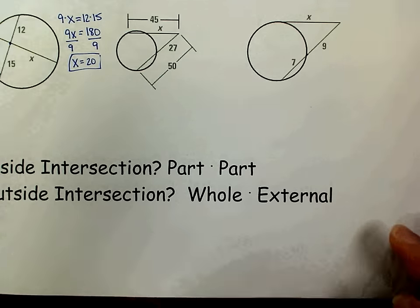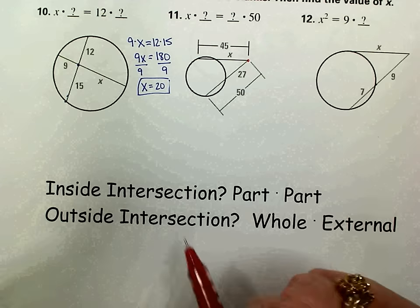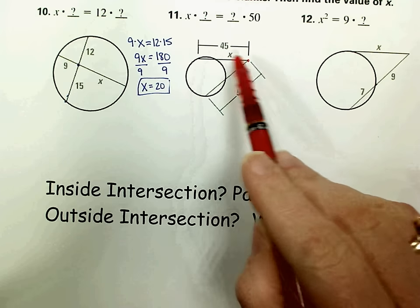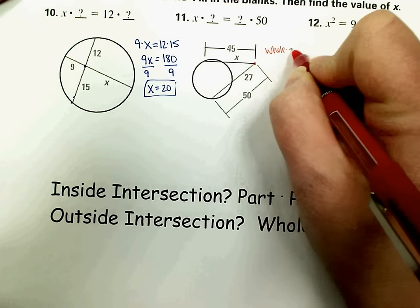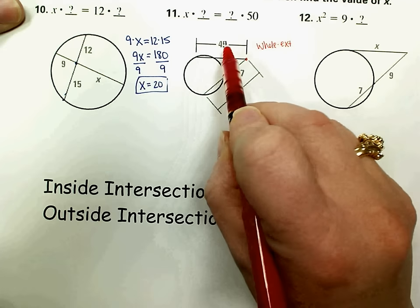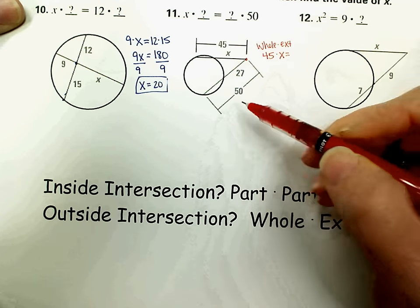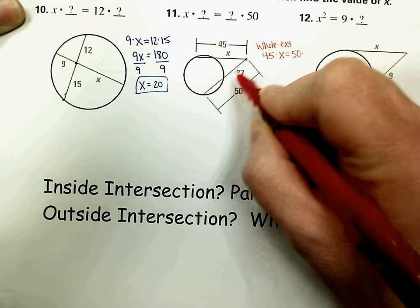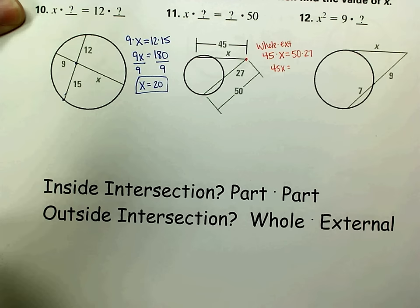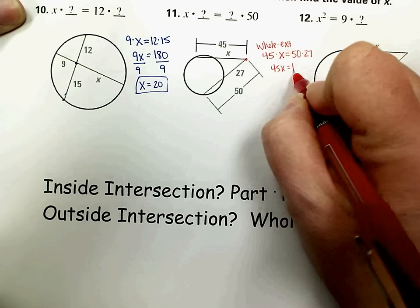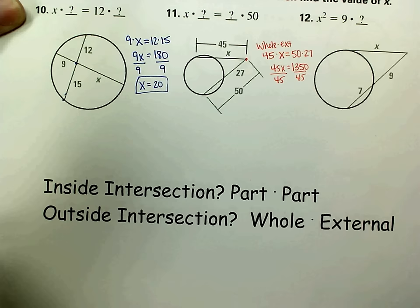The next problem with the outside intersection is number 11. We have a secant and a secant intersecting outside the circle. The whole length of the first secant is given as 45; we multiply it by the external part, which is x. On the other secant, the whole length is 50 and we multiply it by the external part, which is 27. So 45x equals 50 times 27, which is 1350. Dividing both sides by 45, we get x equals 30.